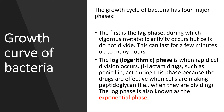The growth cycle of bacteria has four major phases. First is the lag phase, in which there is vigorous metabolic activity but cells do not divide. This phase can last from a few minutes to many hours. Second is the logarithmic phase, in which there is rapid cell division. Beta-lactam drugs, for example penicillin, act during this stage because the cell is dividing and peptidoglycan is being made. The log phase is also known as the exponential phase.